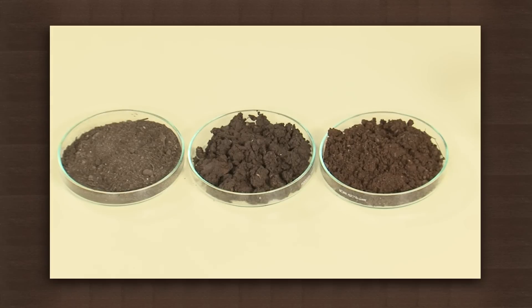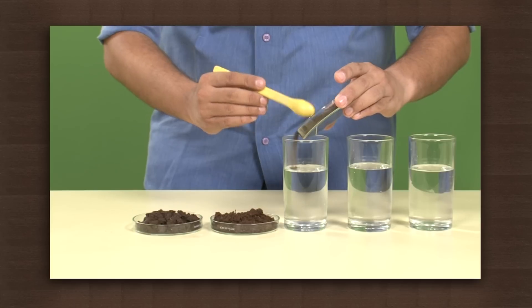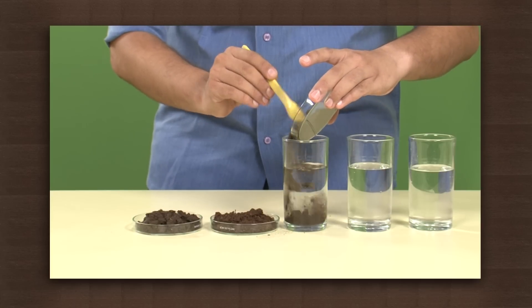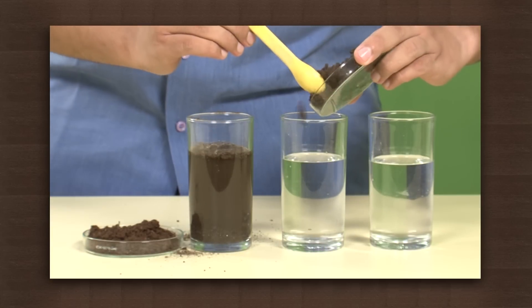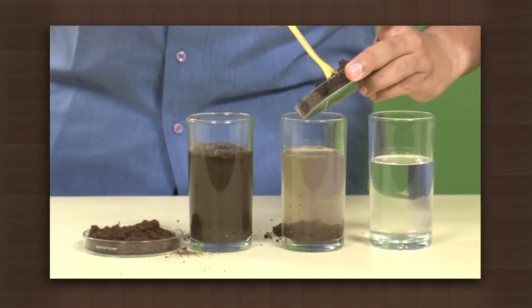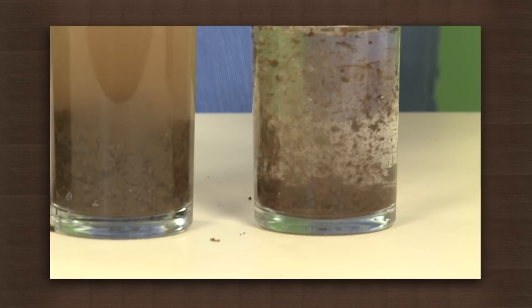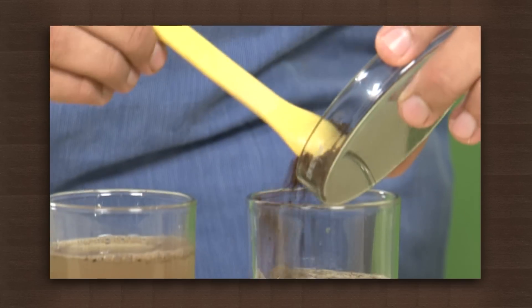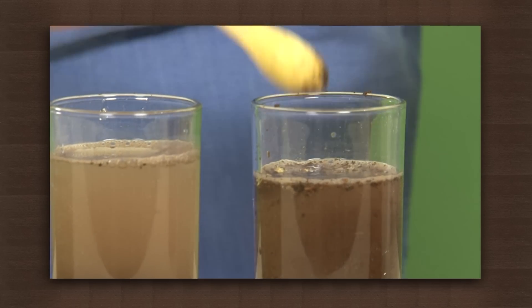Here we will see an experiment to find out which soil is loamy. For this we need three soil samples. First we will take three glasses filled with water and add each type of soil to the glasses. Stir them well.